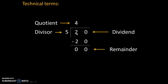Suppose we need to divide 20 by 5. So 5 fours are 20, and 20 minus 20 gives us 0. Here, 5 is called the divisor, 20 is called the dividend, 4 is called the quotient, and 0 is called the remainder.